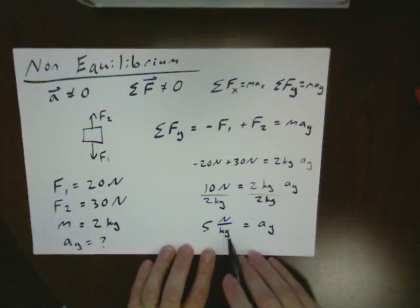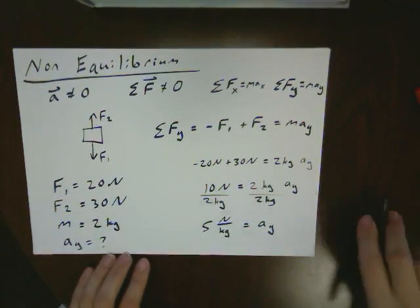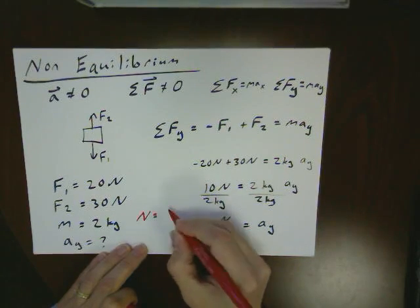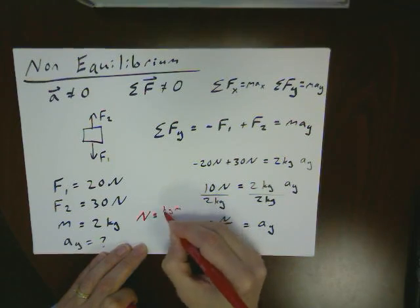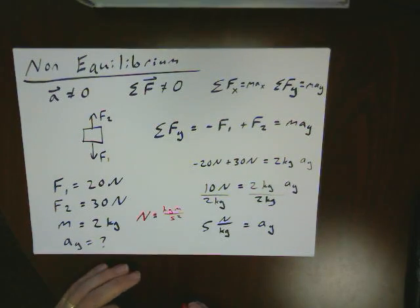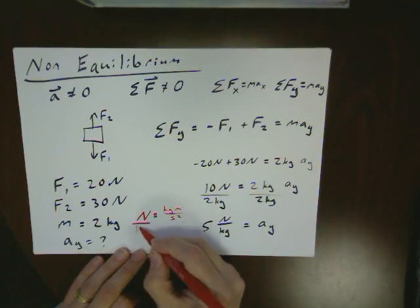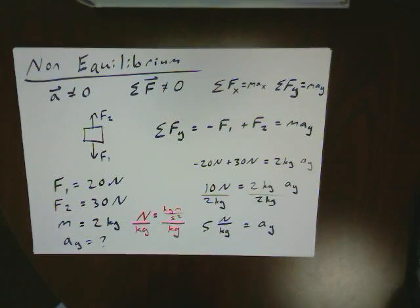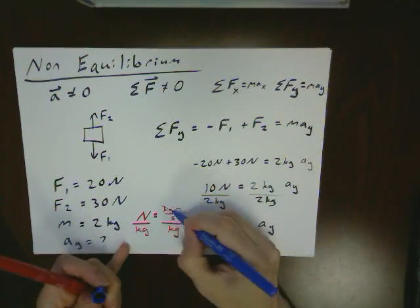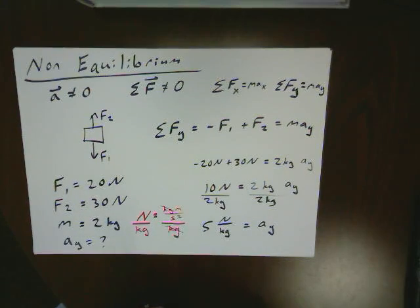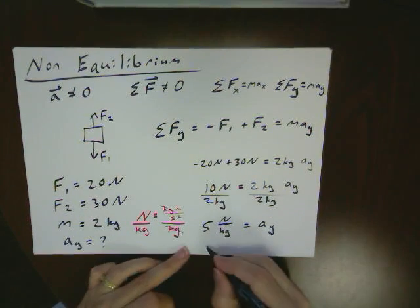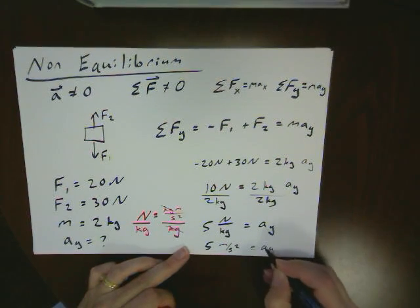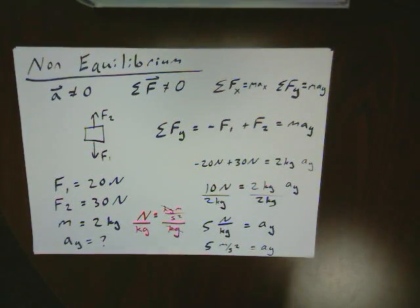The units look a little weird at first until we remember that a newton is equal to a kilogram meter per second squared. So a newton per kilogram would have those two kilograms cancel each other off. And this is really just 5 meters per second squared for my acceleration in the y direction.